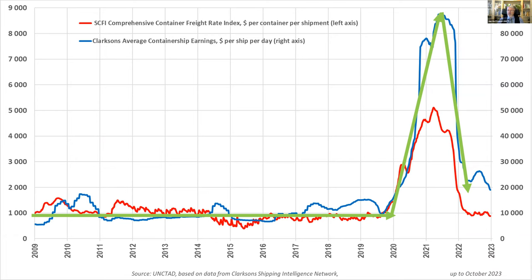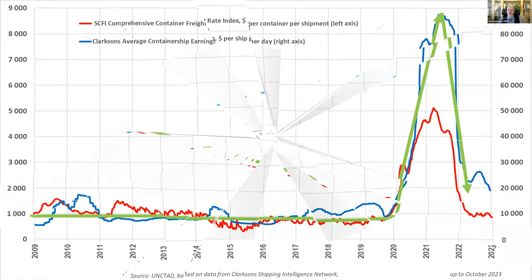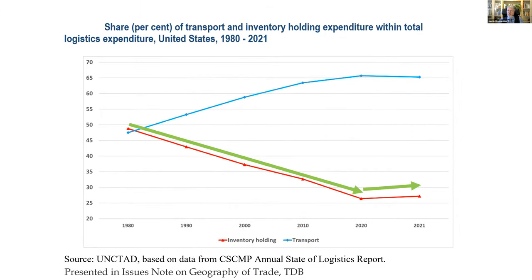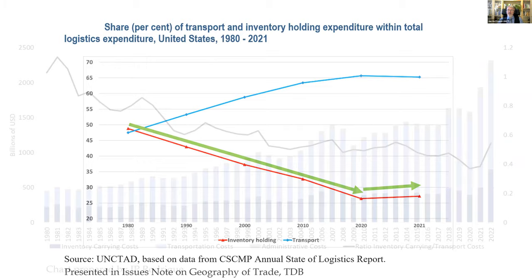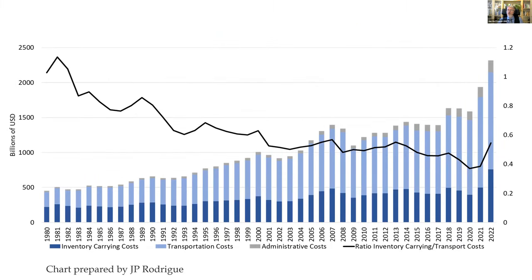Freight rates are now back to where they were before. What does this mean for the long-term trends? During COVID, the share of inventory holding went up — more inventory holding, less efficient transport. The latest data still shows this increasing coefficient. I would still expect and hope that we will benefit from the efficiency gains and digitalization improvements introduced during COVID, but for now it's not so good.